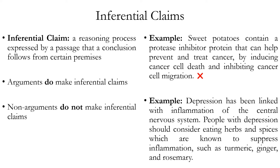Let's look at another example. Depression has been linked with inflammation of the central nervous system. People with depression should consider eating herbs and spices which are known to suppress inflammation, such as turmeric, ginger, and rosemary. Is this an argument or not? The answer is yes — it does make an inferential claim. It's trying to justify the second sentence via the first, saying that because depression has been linked with inflammation, people with depression should eat these herbs and spices. So regardless of whether it's a good argument, it still counts as an argument.